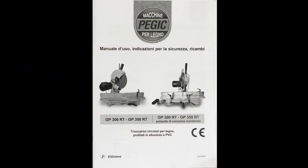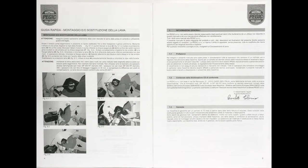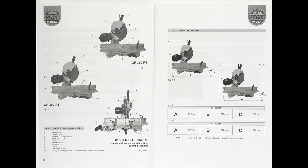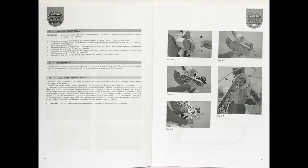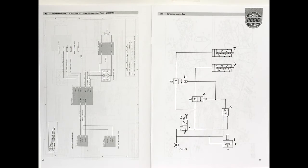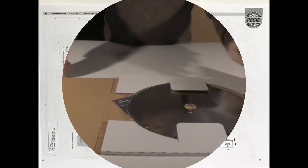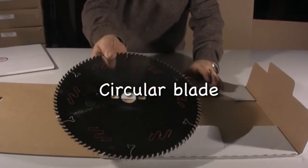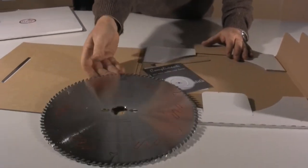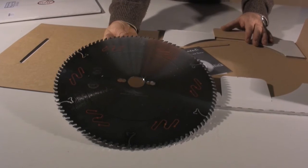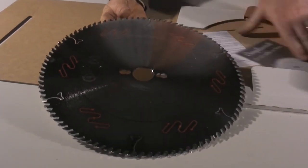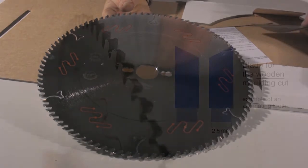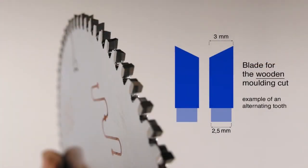The machine is equipped also with an exhaustive manual of 34 pages with illustrations. The GP350 saw works with circular blades with a 350 mm diameter and a 30 mm hole. The blades provided by Rinaldin are particularly suitable for cutting frames.